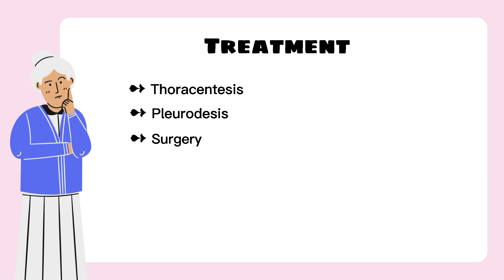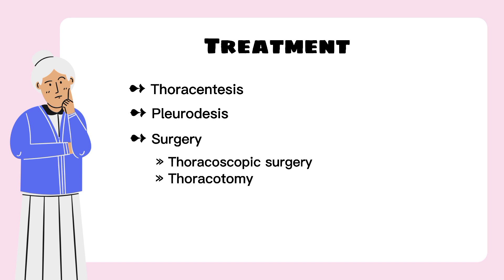Another treatment option is surgery. Pleural effusions that cannot be managed through drainage or pleural sclerosis may require surgical treatment. The first surgical option is thoracoscopic surgery, which is effective in managing pleural effusions that are difficult to drain or occur due to malignancy. The other one is thoracotomy, which is performed to remove all of the fibrous tissue and aids in evacuating the infection from the pleural space.